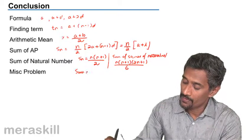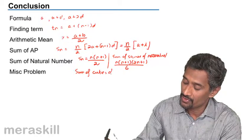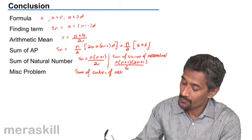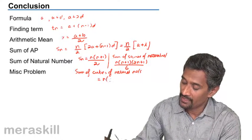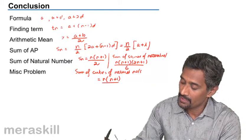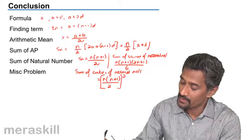Sum of cubes of natural numbers, which is [n(n+1)/2]².